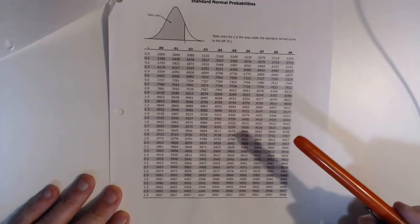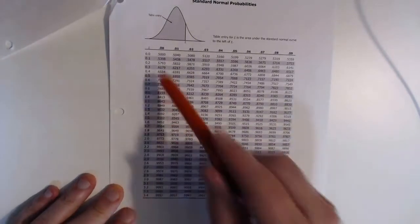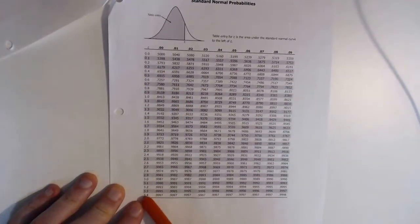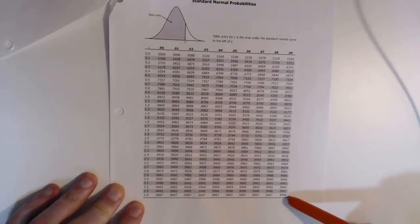So as an example, we could find the Z score of 3.49. Well, that's the largest value that we have in our table: 3.4 and then 9, and that value is 0.9998.